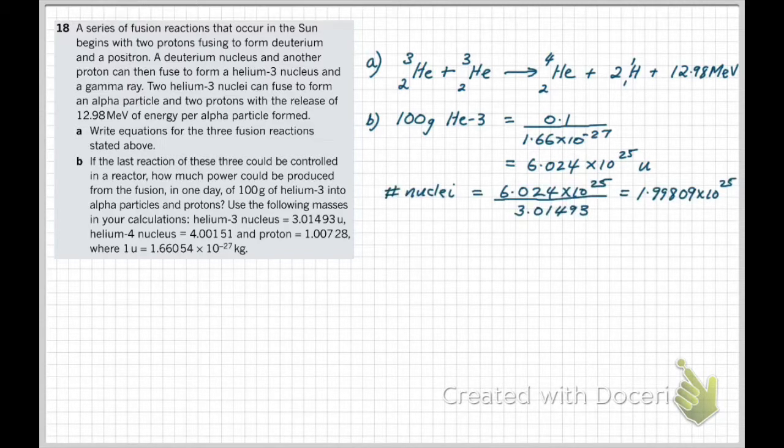From here we're going to work out the number of helium-3 nuclei available for fusion. So we need to divide by the mass of a single helium-3 nucleus, which is given in atomic mass units so our units match, and we have 1.99809 by 10 to the 25th nuclei. This is the number of nuclei that are going to fuse in the 24-hour period we are given.